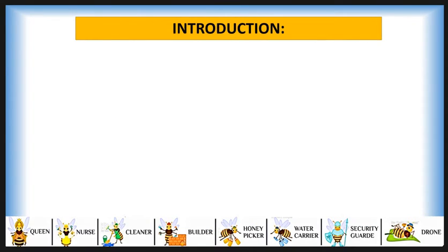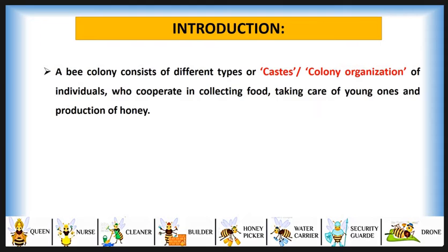First we see the introduction of colony organization and division of labor. We all are social beings — we live in a society and work for a society. Similar are the bees, a social insect. Like us, each individual in a bee colony has to work for the welfare of others and the colony, which we term as division of labor. A bee colony consists of different types of caste or individuals who cooperate in collecting food, taking care of young ones, and the production of honey.